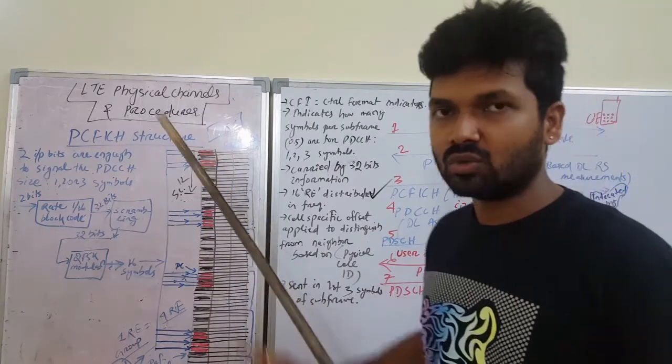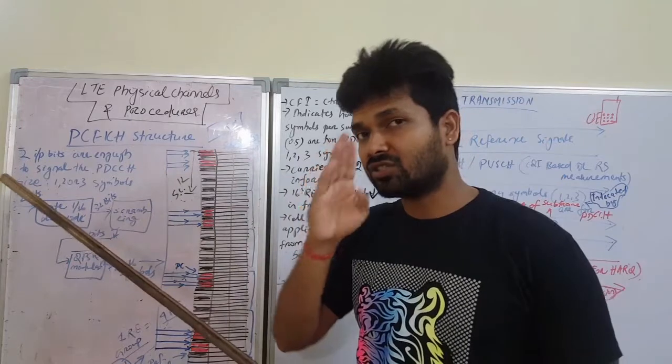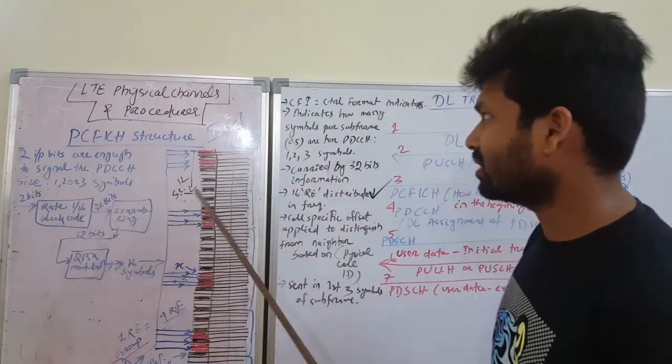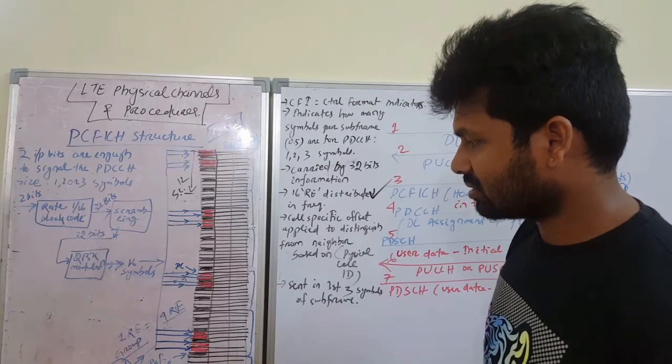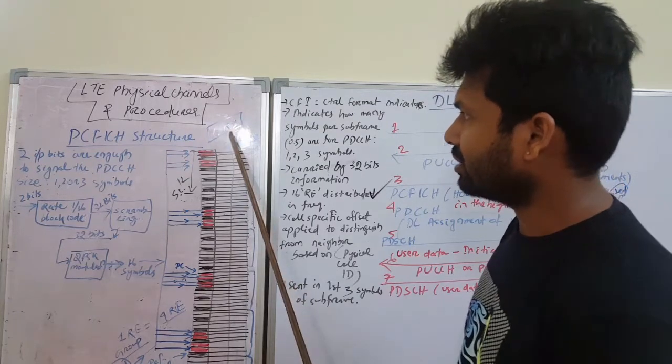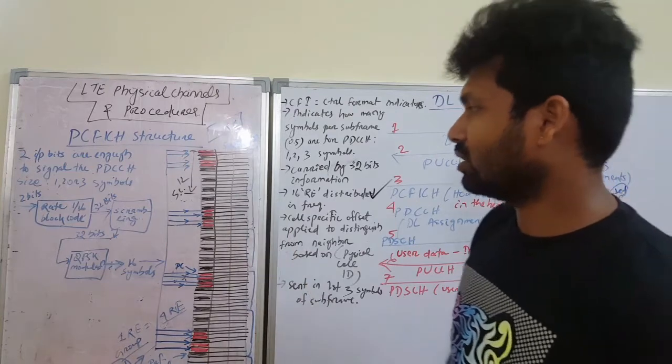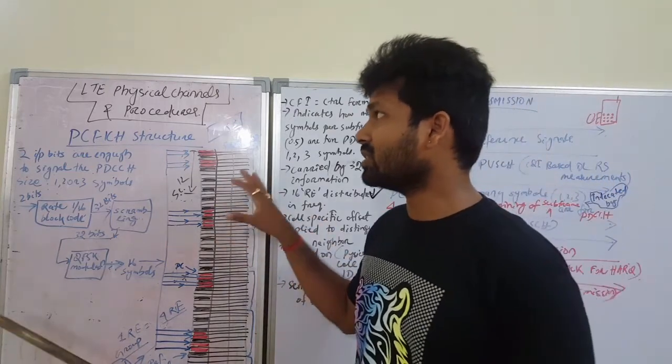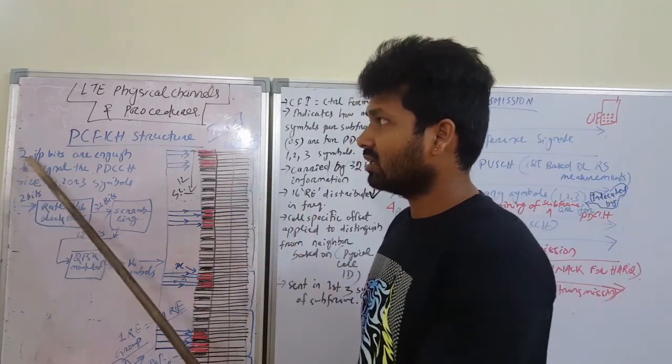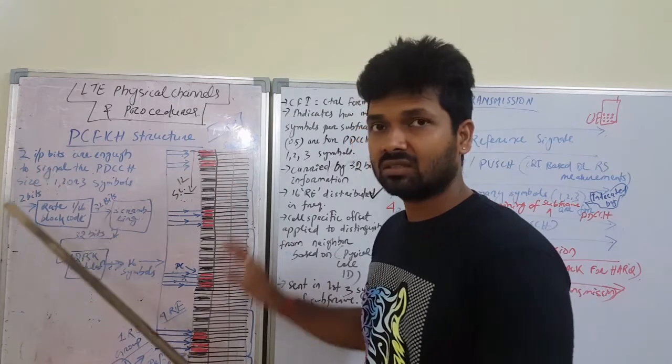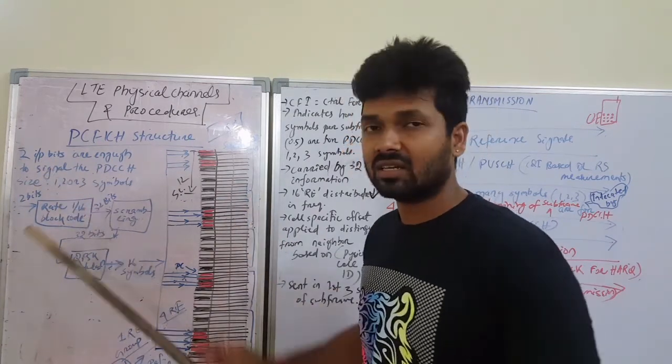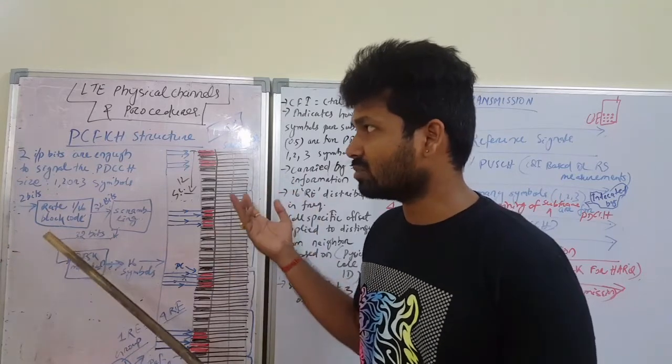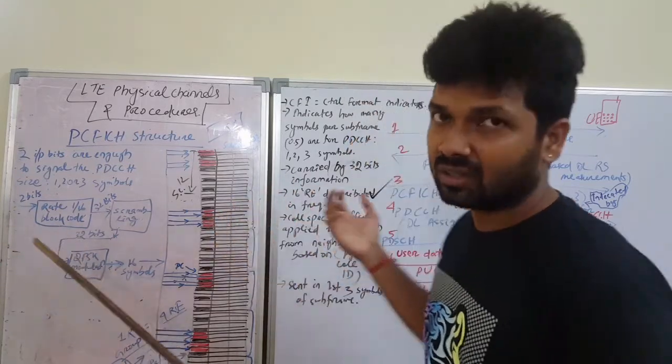So these are subframes and this is frequency domain, this one is time domain. Let's understand now the PCFICH structure. It has two input bits which is enough to signal the PDCCH size - whether it's one, two, or three symbols for